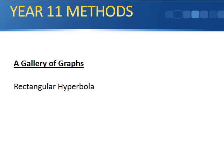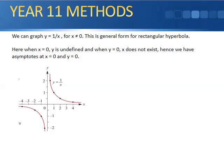Today we're starting the gallery of graphs, in particular the rectangular hyperbola. The rectangular hyperbola has the rule y = 1/x, and of course x cannot equal 0 because you can't divide by 0. So at x = 0 we have an asymptote, which we should mark with dots and label. Rearranging gives x = 1/y, and since y cannot equal 0, we also have an asymptote at y = 0.